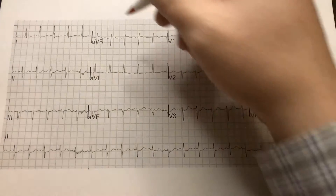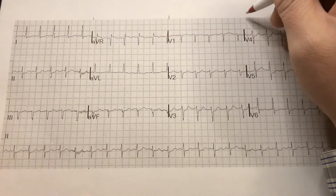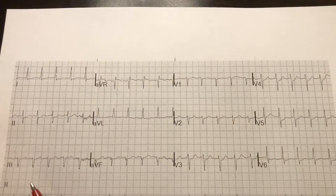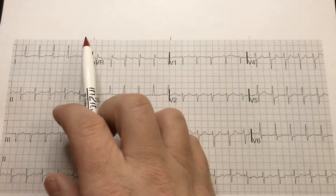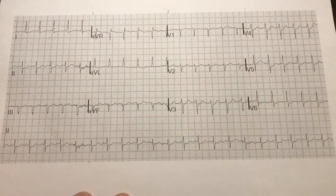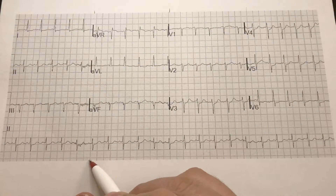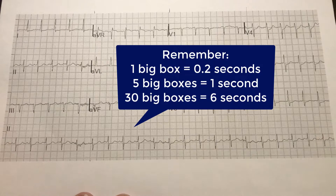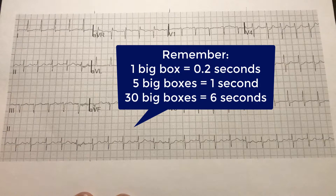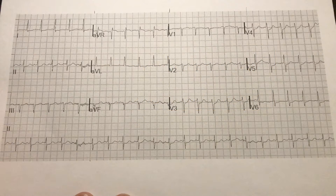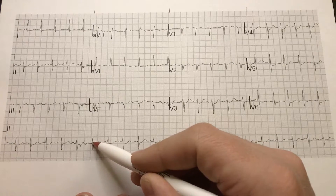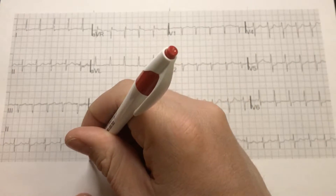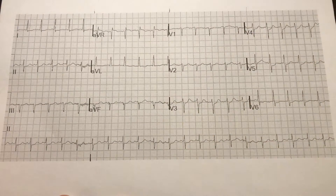Some machines are going to mark little tick marks across the top, marking at three seconds, so you can quickly identify six seconds. But most of the time you may want to count it out. One big box, or five millimeters, is 0.2 seconds, which means five big boxes equal one second, and 30 big boxes equal six seconds. I usually try to find an area where there's a QRS complex and start counting on that dark line — so in this case, here is zero and I'm going to count out 30 boxes.